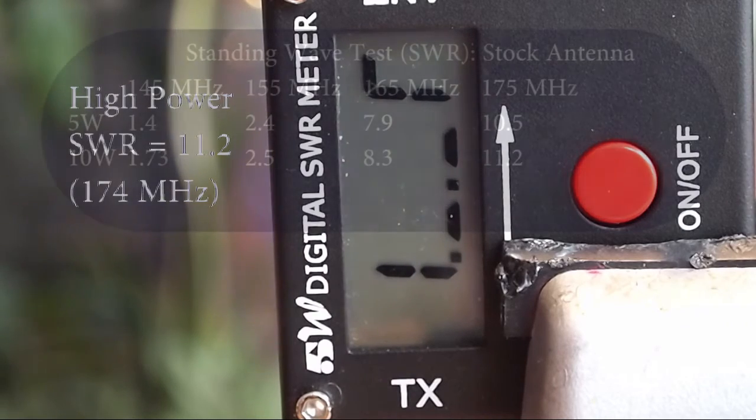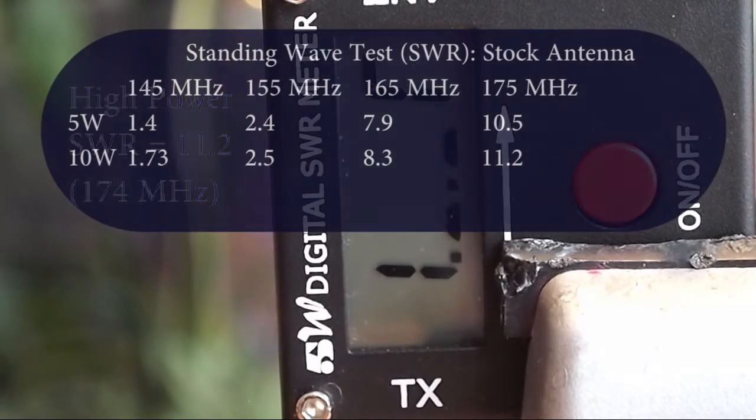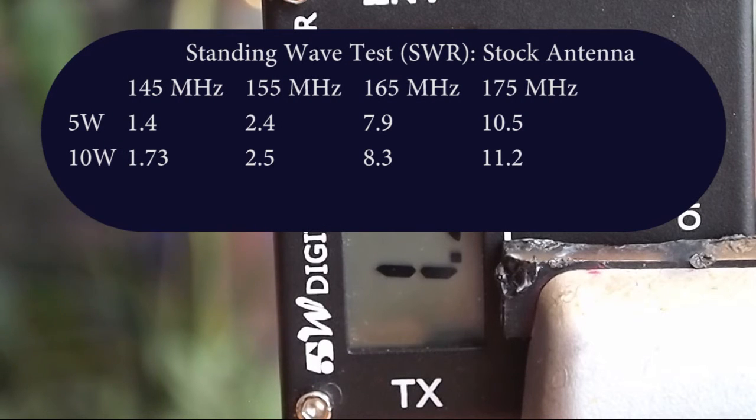So with the stock antenna, we got acceptable readings, 145 to 155 MHz. When we moved up to 165, we started getting past the point we want to be. So it seems also that it didn't appreciably make the standing wave too much worse going on to the high power setting. And next we're going to go and look and see what we're getting for reflected power and forward power.